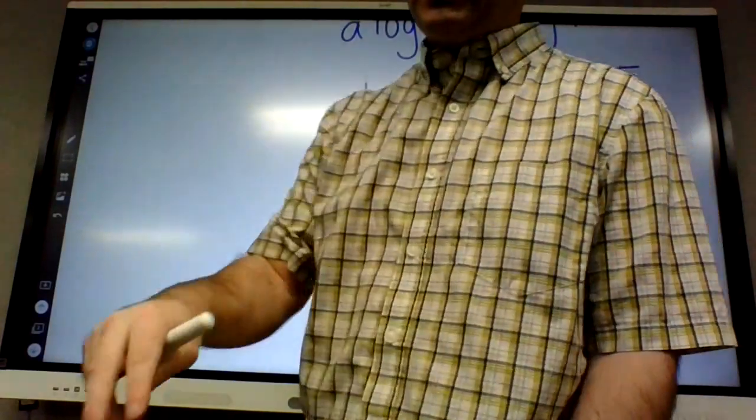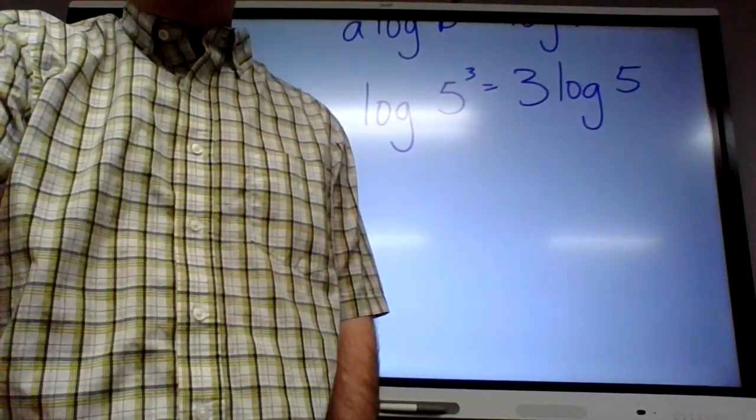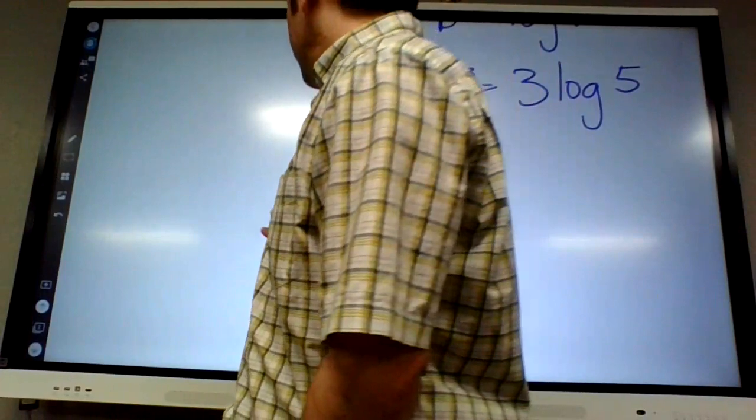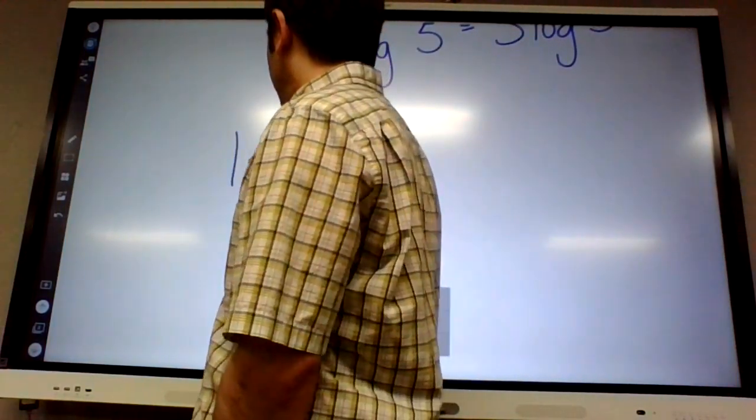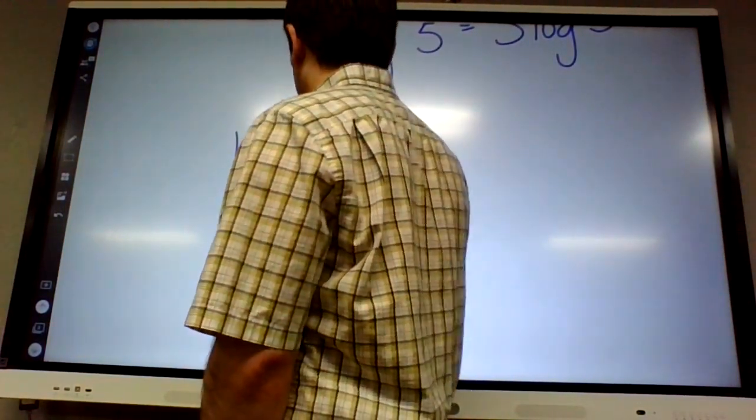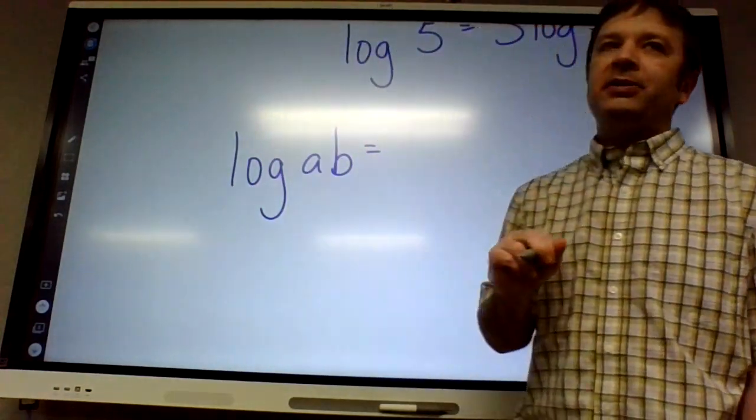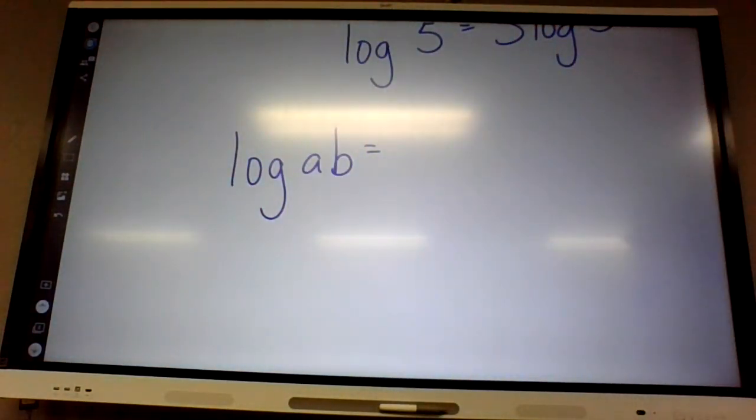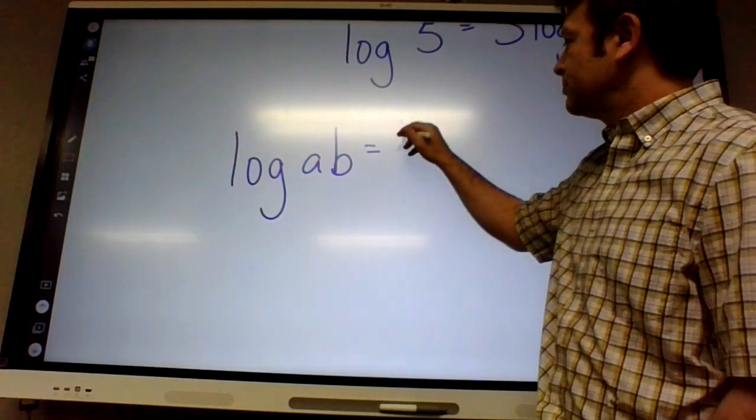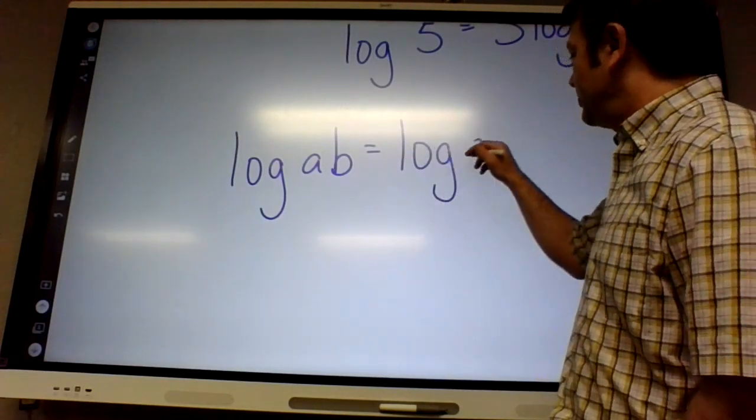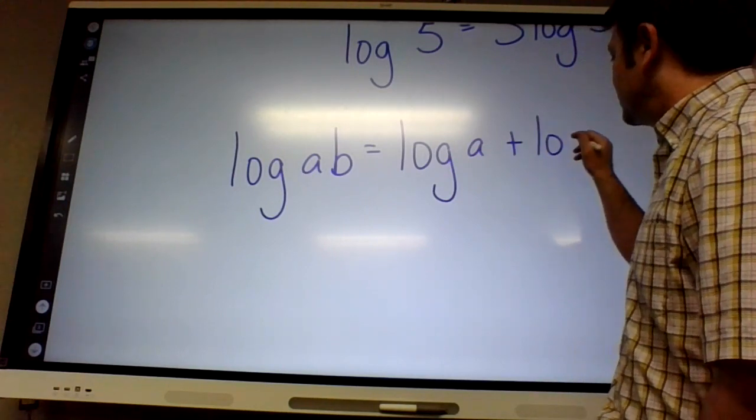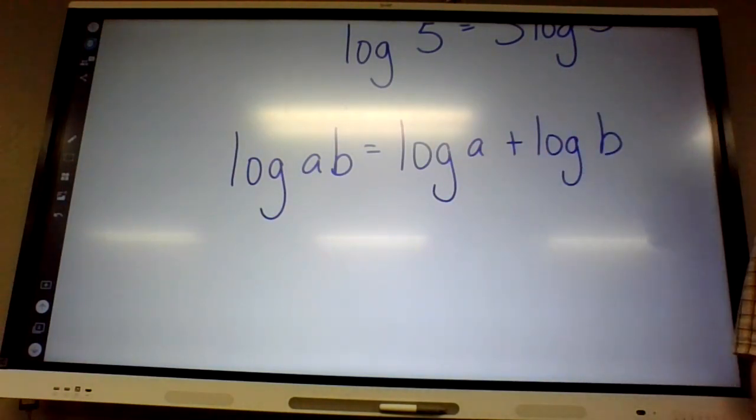So number one: write each expression in terms of log of a and log of b and log of c. It's kind of an accident but I use the same letters as my first example. What's log of a times b equal? Log of a plus log of b. That's it. It's like rule number one but we're writing it backwards from what I wrote at the beginning.